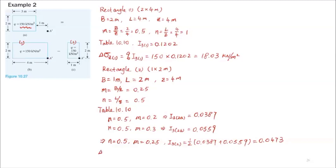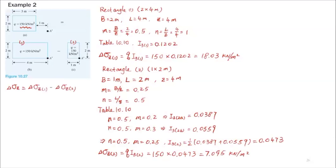The stress increase for Rectangle 2 is 150 times 0.0473, which equals 7.095 kN/m². Once we have both values, the final stress increase due to the original rectangle is the difference: 18.03 minus 7.095 equals 10.93 kilonewtons per meter squared. That is the stress increase due to the original rectangle — the difference between the two rectangles.